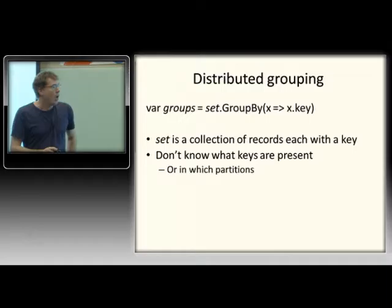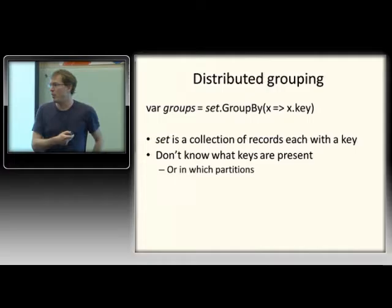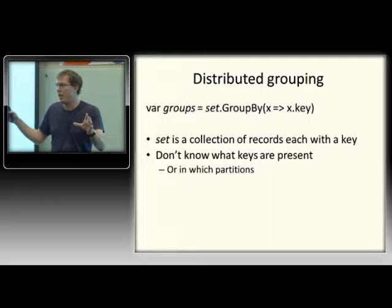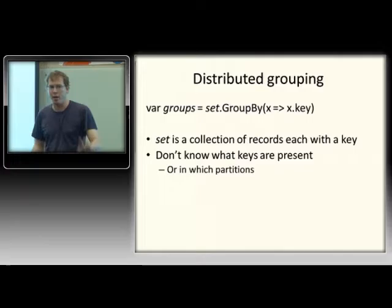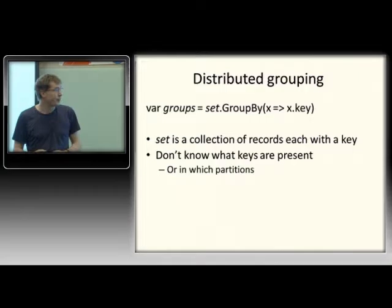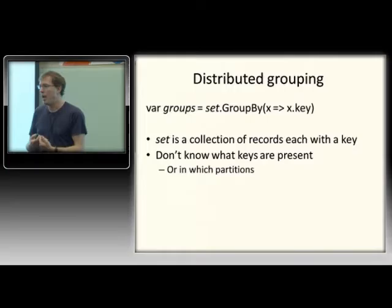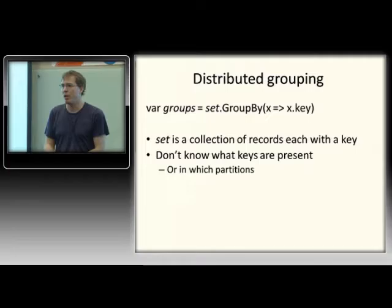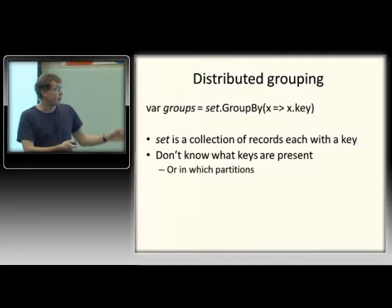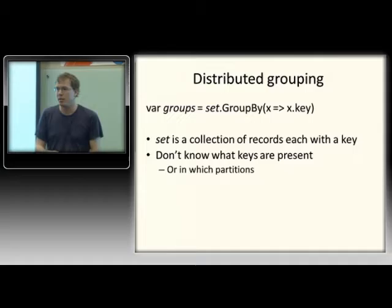Let's start with GroupBy — we kind of started with select, but that was absolutely the simplest thing because select and equivalently where are completely independent and the graph is very simple. You just take input parts, operate on each one independently, and write the output parts. The next most complicated thing is GroupBy. The set is some collection of records, each with a key, and we want to form them into groups so everything with the same key ends up in the same group — and in fact on the same computer, since you'll want them in the same place for subsequent computation.